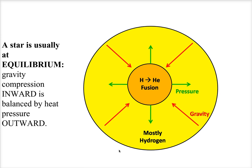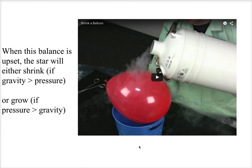Equilibrium means balance. A normal star is at balance or equilibrium between gravity squeezing inward and the gas pressure pushing outward to balance that out. Here's a video by a scientist at James Madison University who is comparing this to a balloon being heated and cooled.